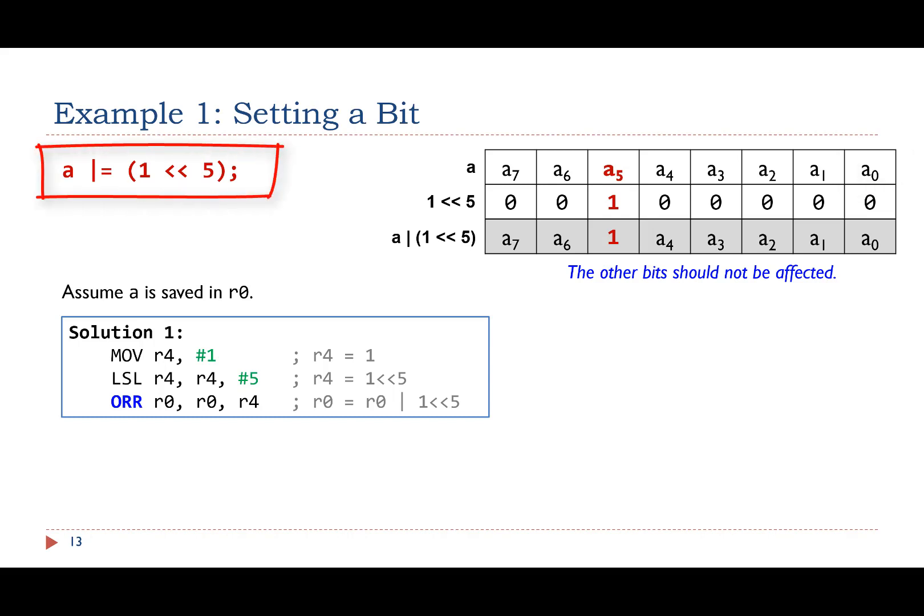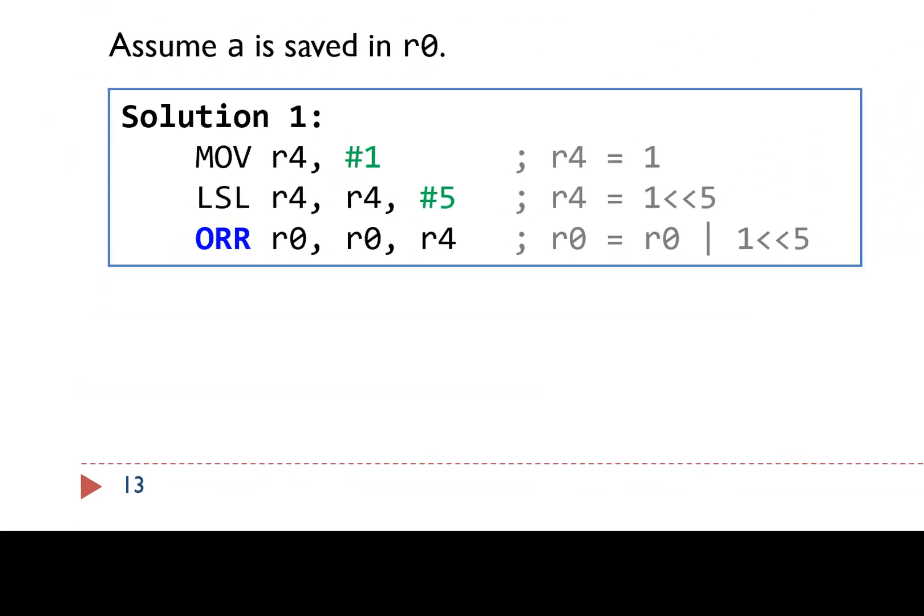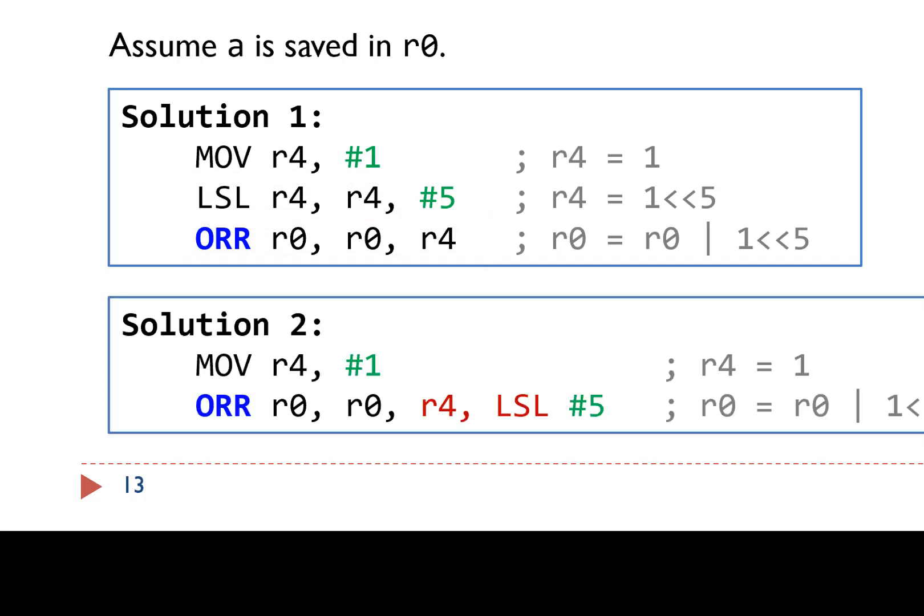Here's the C implementation. Assume the value of A is stored in register R0. In the first solution, we initialize register R4 to 1, then shift it by 5 bits, and finally use bitwise OR to set bit 5. The second solution uses the barrel shifter. It uses fewer instructions than the first implementation and accordingly runs faster.